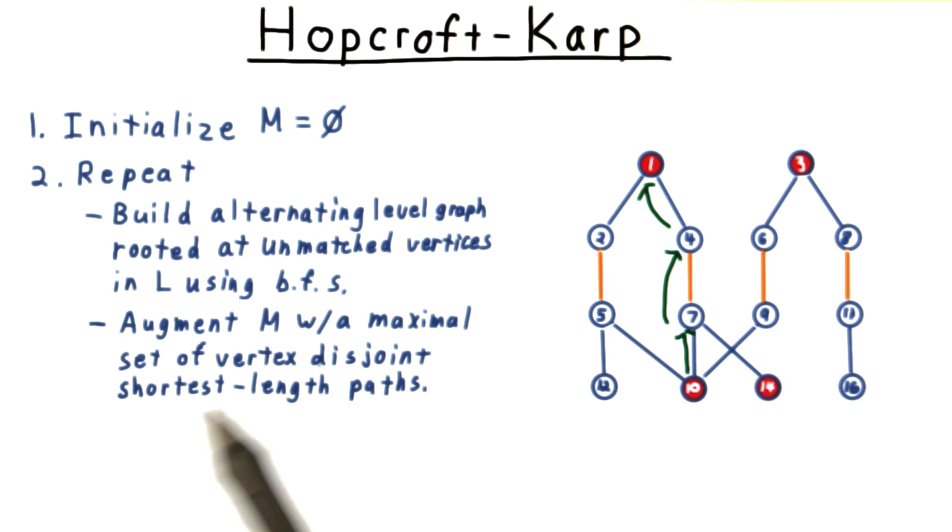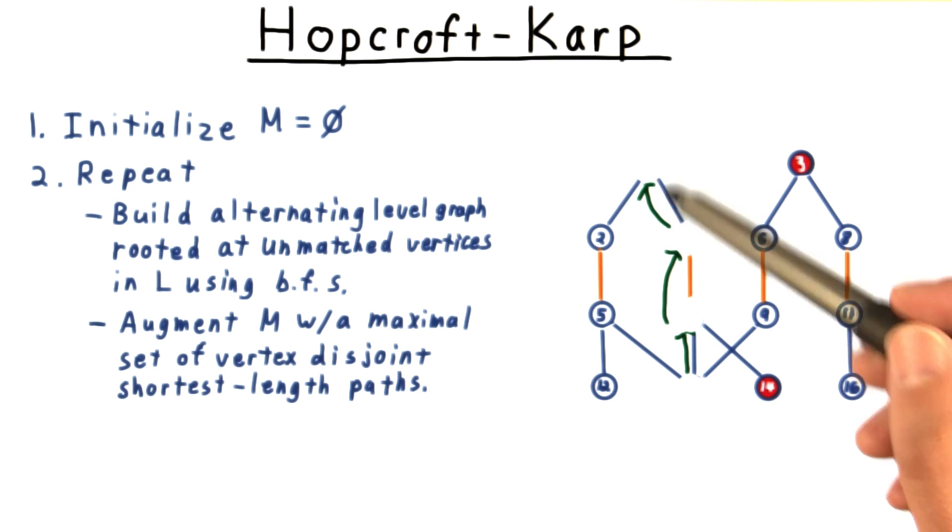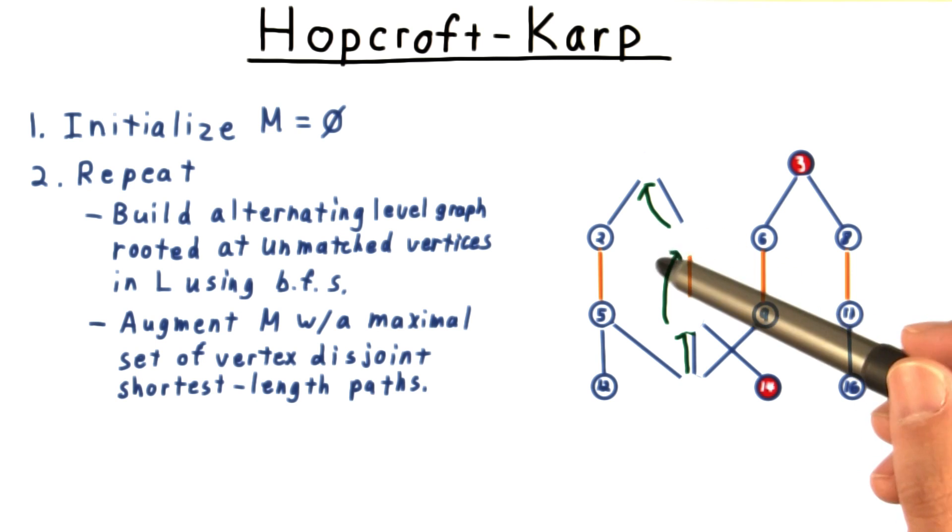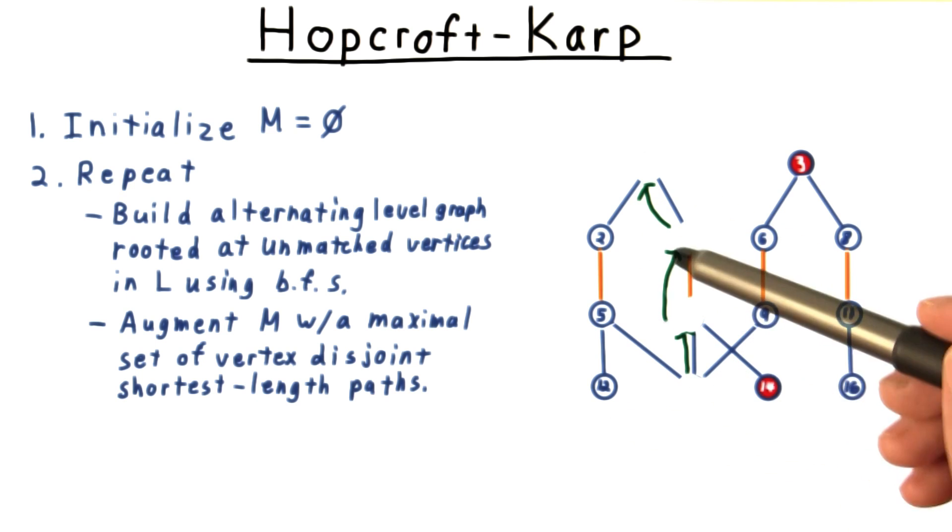Well then, because I'm looking for a set of vertex disjoint paths, I can go ahead and delete these vertices. And with these vertices deleted, I can also go and delete all the other vertices that got orphaned in the process.